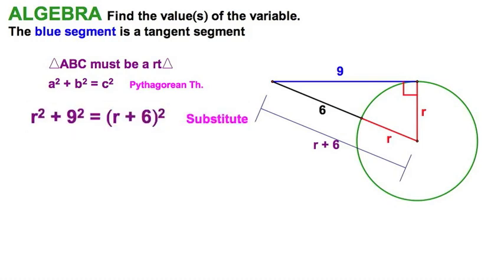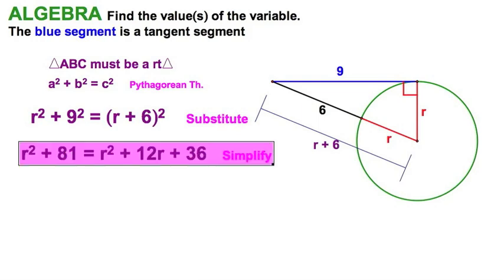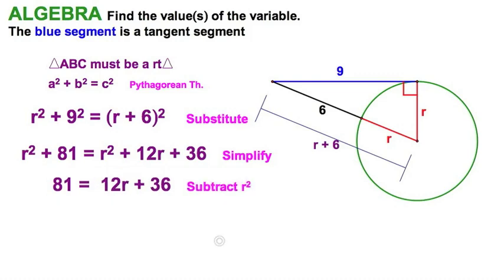Making our substitution, the problem looks like this. Remember we'll need to expand here to make this a perfect square trinomial. And very conveniently, we've got an r squared on both sides, this is going to happen every single time in one of these problems, and now it's a linear equation, very easy to solve.